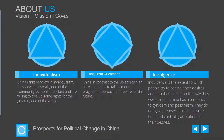Long-term orientation is a third area where China contrasts with the United States, and they tend to take a more pragmatic approach about the future. Indulgence is a final area of difference, where indulgence is the extent to which people try to control their desires and impulses based on how they were raised. China has a tendency to be pessimistic, and they do not give themselves much leisure time and control gratification of their desires.